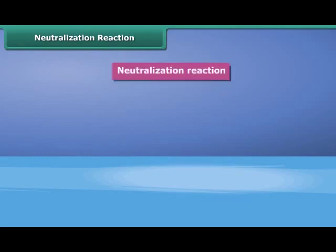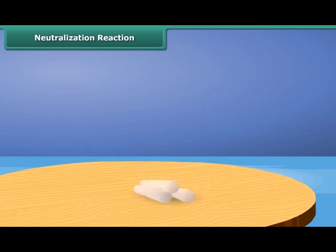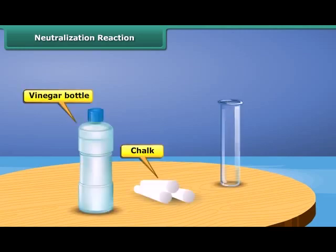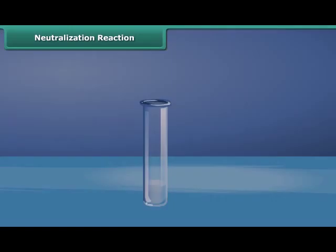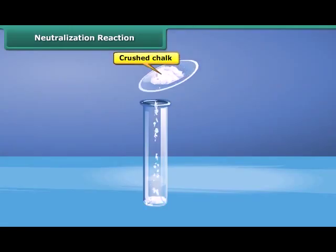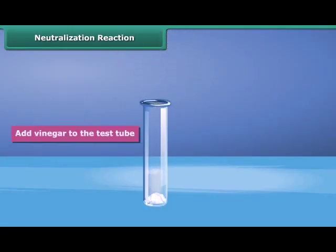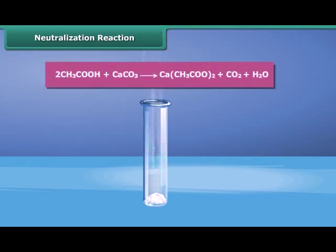Let us do an activity to understand neutralization reaction. Materials needed are a piece of chalk, vinegar, and a test tube. Drop some crushed chalk in the test tube, add vinegar to the test tube, and watch what happens. The chalk reacts with the vinegar. As the chalk reacts, bubbles of carbon dioxide come out.